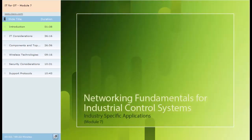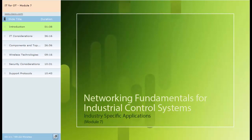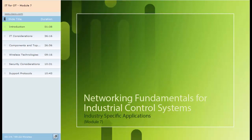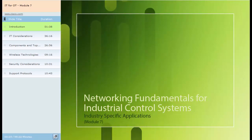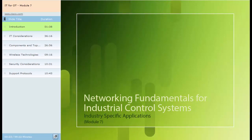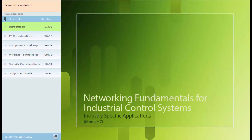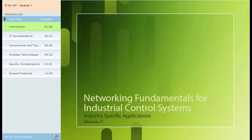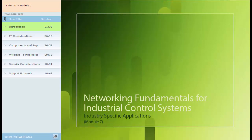Welcome to the Industry Specific Applications module of Networking Fundamentals for the Industrial Control Systems course. The goal of this course is to enable learners to assimilate the information presented in further training courses, such as the Managing Industrial Networks with Cisco Networking Technologies. This module will discuss concepts and protocols needed to support the industrial automation network environment and compare those to the concepts and protocols used in the IT network, including convergence, network architectures and topologies, protocols used in the automation network, wireless networking, security and network management, and additional support protocols.